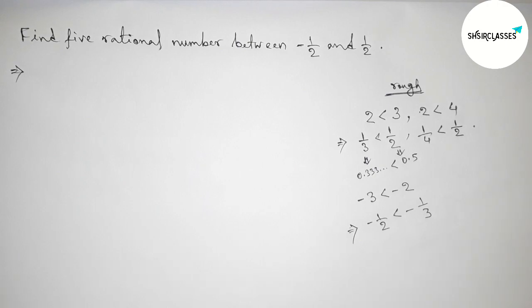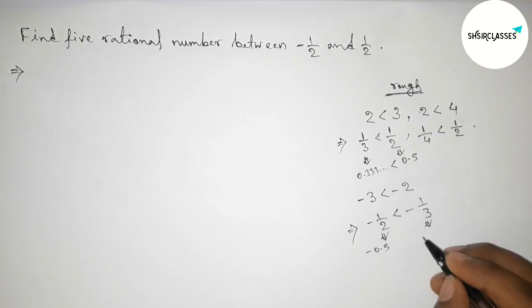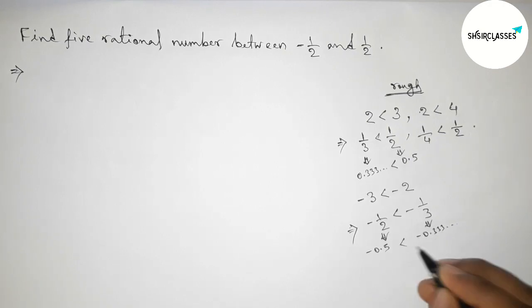Because the value of minus 1 by 2 is minus 0.5, and the value of minus 1 by 3 is minus 0.333 continuous. And we know that less negative number is always greater than more negative number.